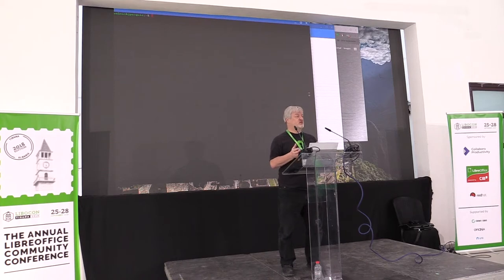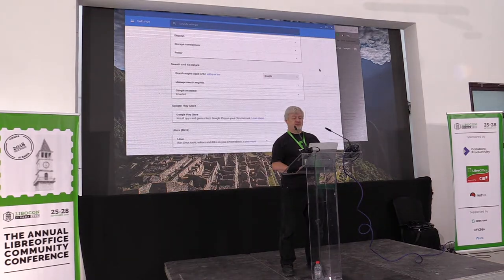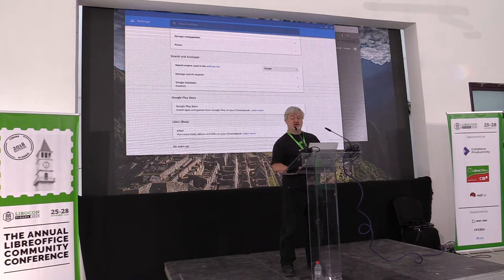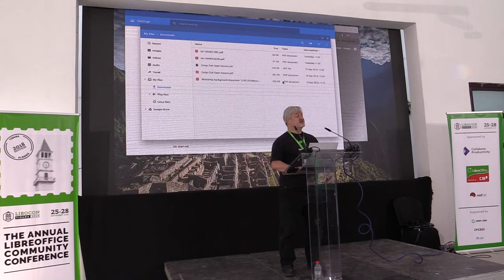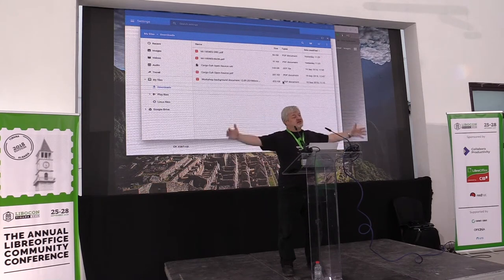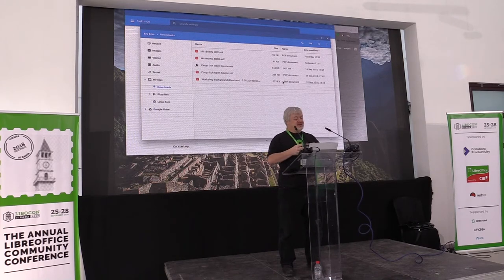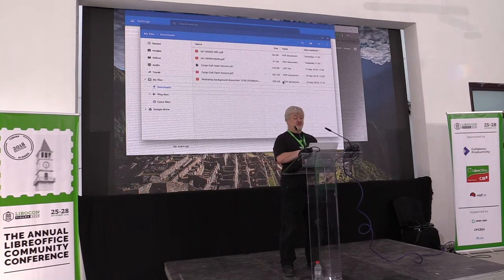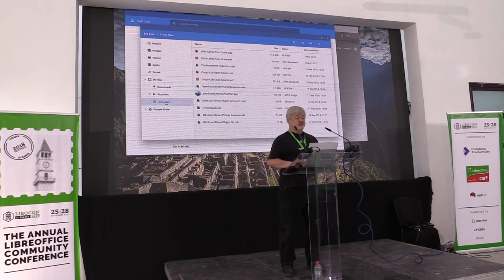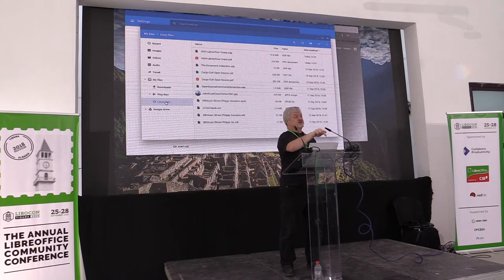Or you can have two different components of your development environment running on them. They've done a reasonably clever thing with the file system. Because it's running in a container, the file system is inside the container. They've made the file system inside the container available out in the outside space. Down here, when I click on Linux files, these files are files in the file system inside the LXD container, and Chrome OS is talking across an API to pull out the different files.